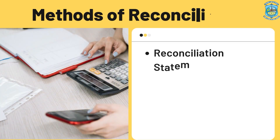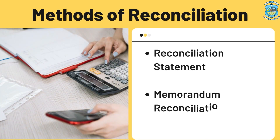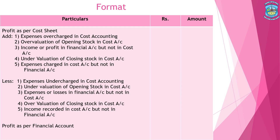There are two methods. First is the reconciliation statement; second is the memorandum reconciliation account. Now we understand how to prepare the reconciliation statement. There will always be two profit figures — profit as per the cost book and profit as per the financial book. Always start by taking the profit as per the cost sheet first, as it will be helpful for solving questions.